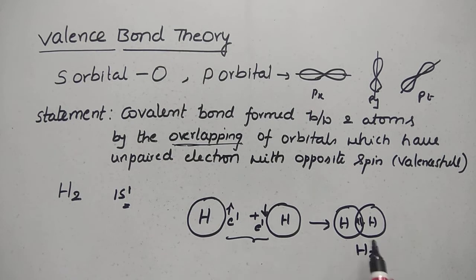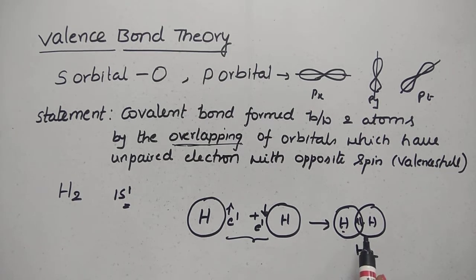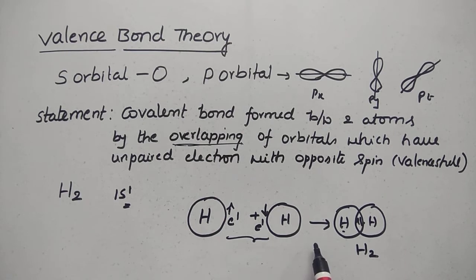The electron pair is formed when the two atoms share electrons. In the H2 molecule, the two atoms are shared — this forms a single bond.